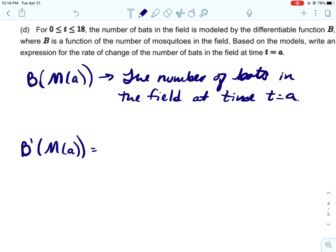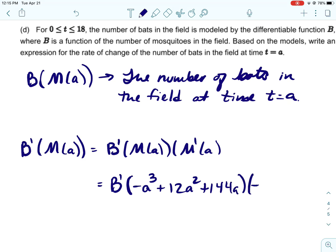So based on the models, write an expression for the rate of change in the number of bats. So that's asking us to find B'(M(a)). So that looks like we're going to have to do the chain rule, so we would do B'(M(a)) and we would have to multiply that by the derivative of M(a) using the chain rule. All right, and so that's going to be B' of, now M(a) we would just take our original M(t) function and put a in for t, and then M'(a), take our derivative we found and put a in for t, and that's all we can do. Again, that was kind of a weird problem.